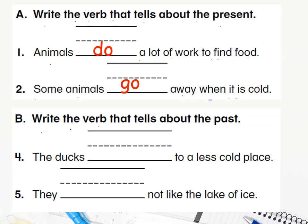Part B says: write the verb that tells about the past. Because it's past, we will directly start thinking about 'did' and 'went,' not 'do' and 'go.' 'Do' becomes 'did' in the past and 'go' becomes 'went' in the past. Number four: 'The ducks blank to a less cold place.' Do we say 'went' or 'did'? Perfect — we say 'went'!